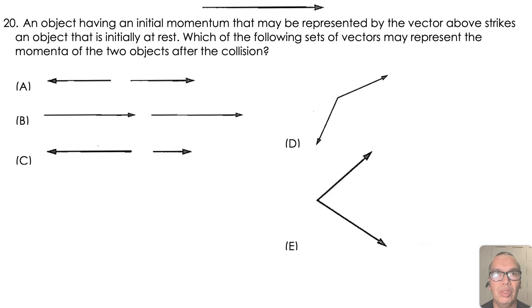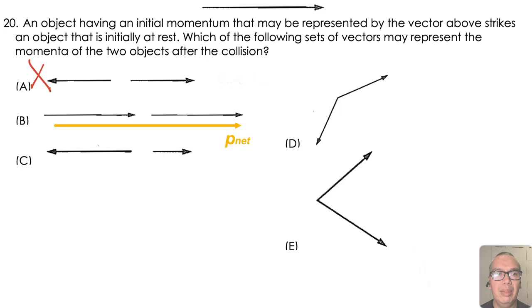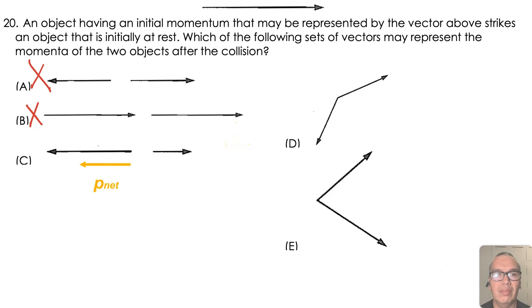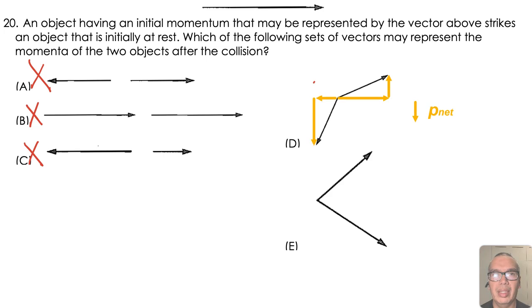Option A shows a total momentum of zero. Option B shows a larger x-momentum than before the collision. Option C shows a negative x-momentum. Option D shows a net momentum in the negative y direction.